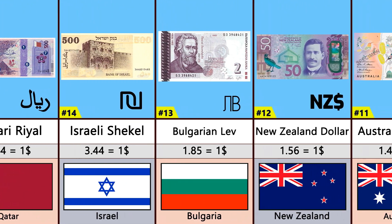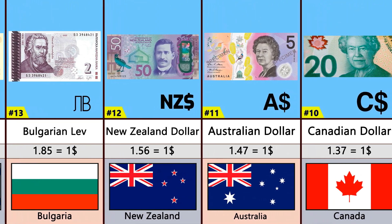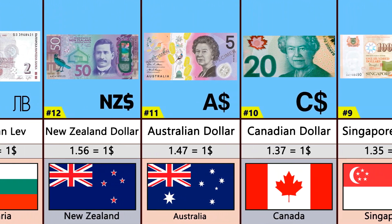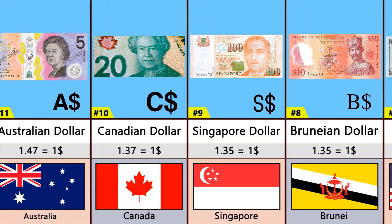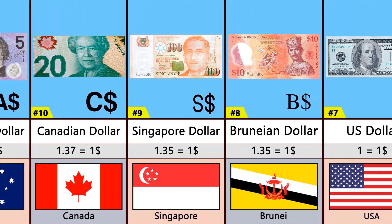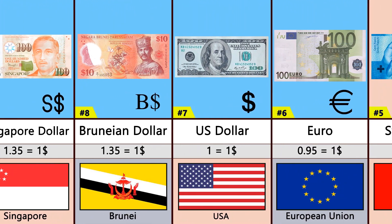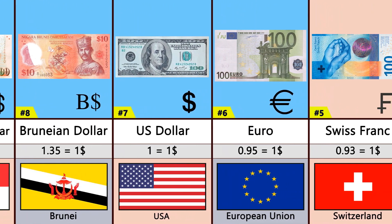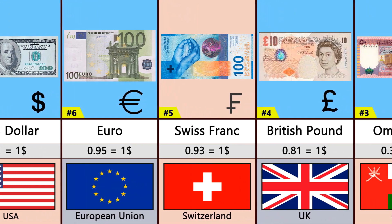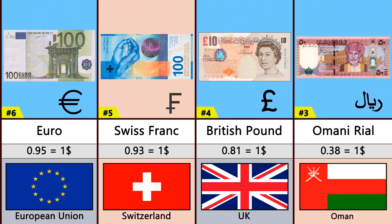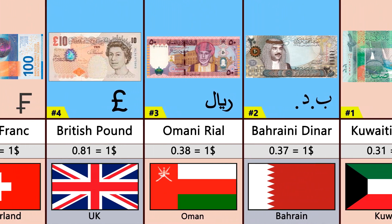Number 14: Israeli Shekel. Number 13: Bulgarian Lev. Number 12: New Zealand Dollar. Number 11: Australian Dollar. Number 10: Canadian Dollar. Number 9: Singapore Dollar. Number 8: Brunei Dollar. Number 7: United States Dollar. Number 6: Euro. Number 5: Swiss Franc. Number 4: British Pound. Number 3: Omani Rial. Number 2: Bahraini Dinar. Number 1: Kuwaiti Dinar.